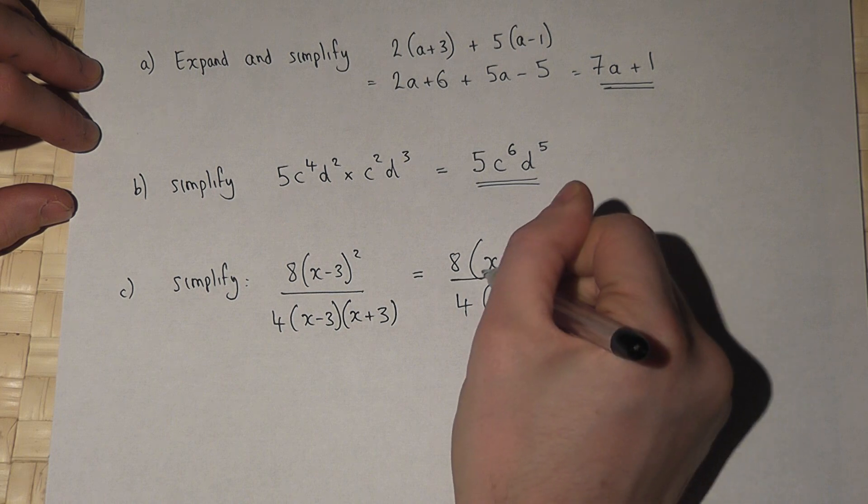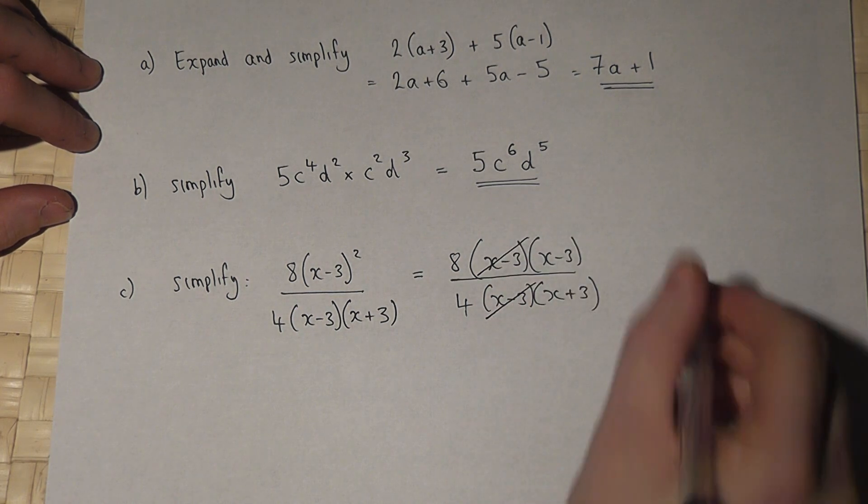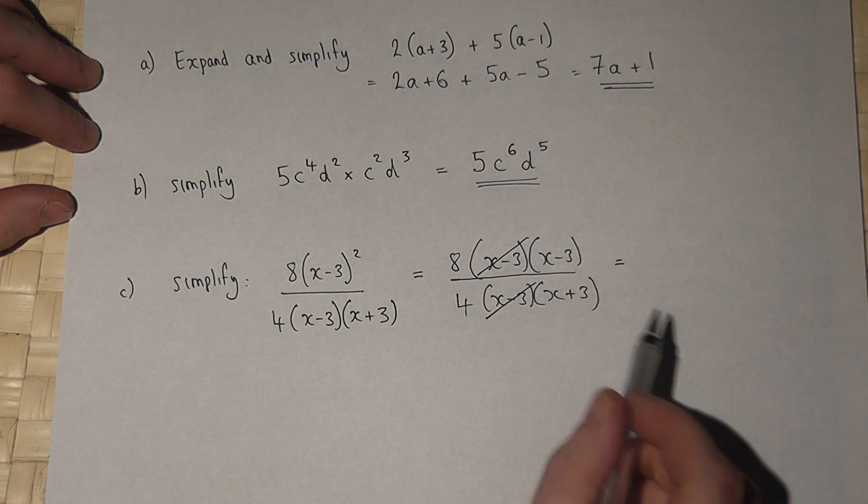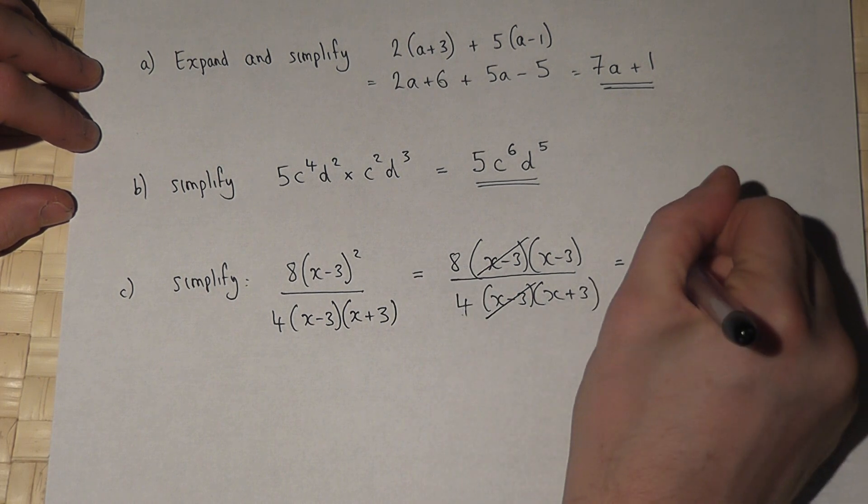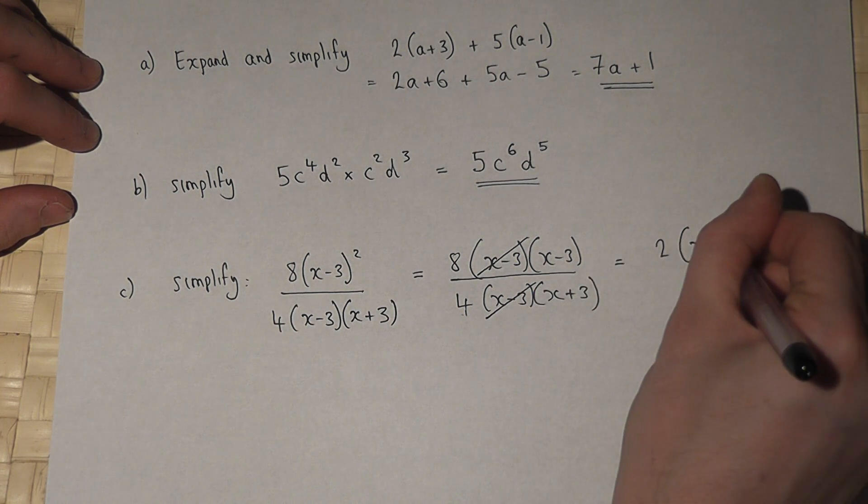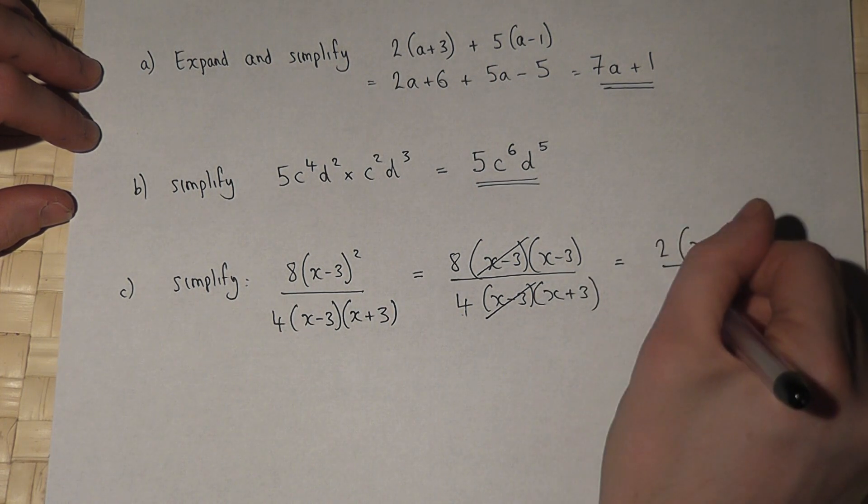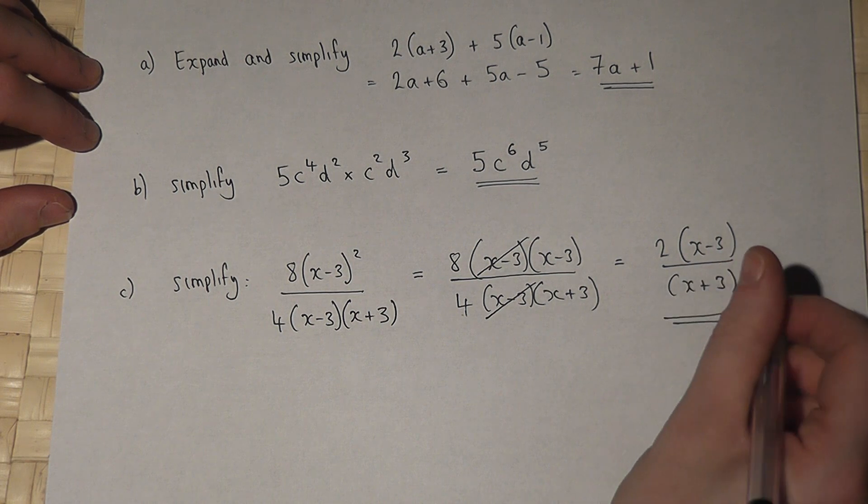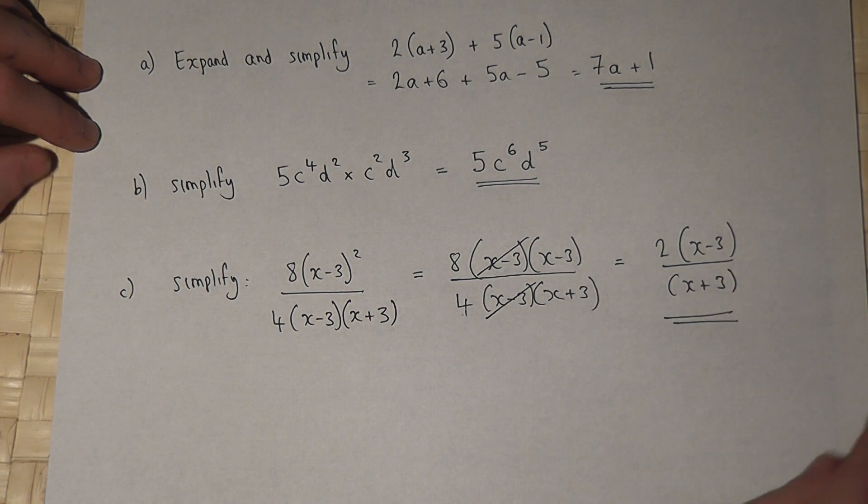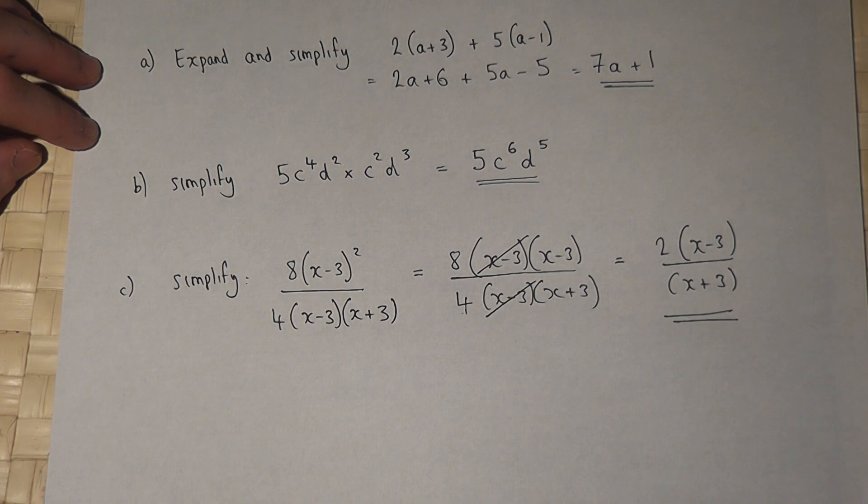And to finish off, 8 divided by 4 is 2, so we're left with 2(x - 3) all over (x + 3), and that is a fraction simplified as far as possible.